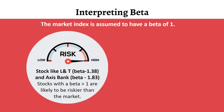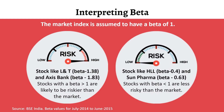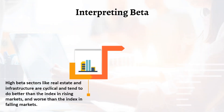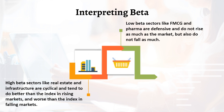A beta value of more than one means more risky than the market, and less than one means less risky than the market. High beta sectors are cyclical and do better in rising markets and worse in falling markets, whereas low beta sectors are defensive and do not rise or fall as much as the market.